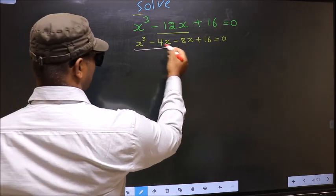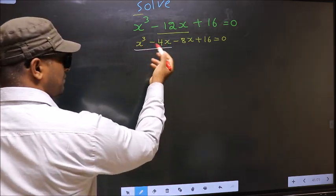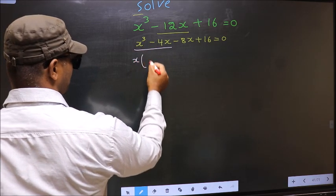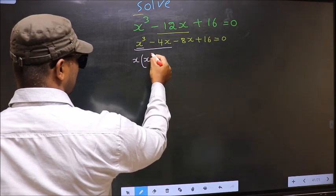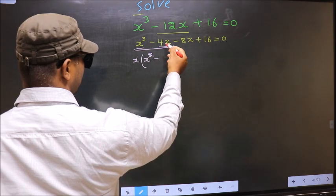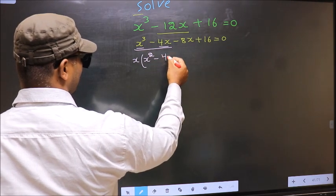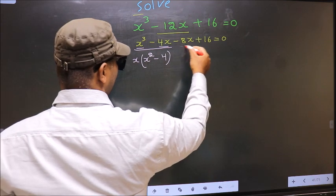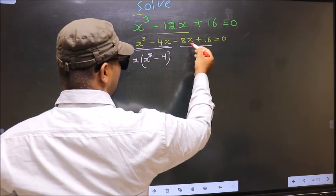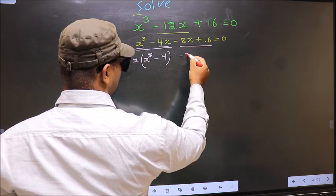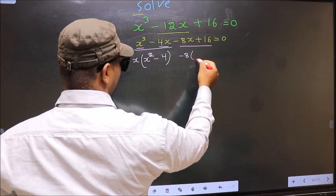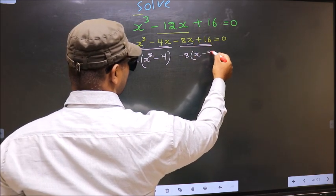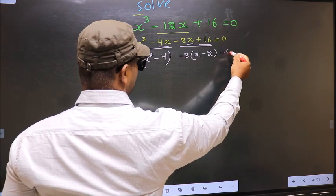Now from these two terms, what can be taken out common is x. So here you get x squared minus 4. In the same way, from these two terms what can be taken out common is minus 8. So here you get x minus 2, equal to 0.